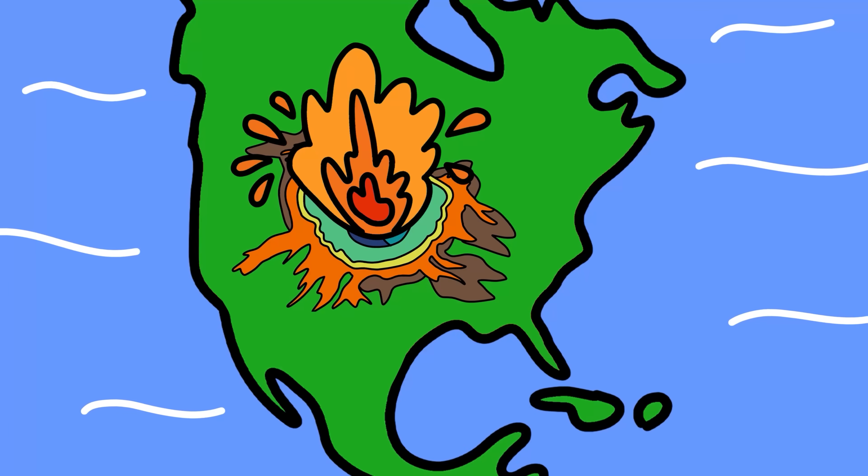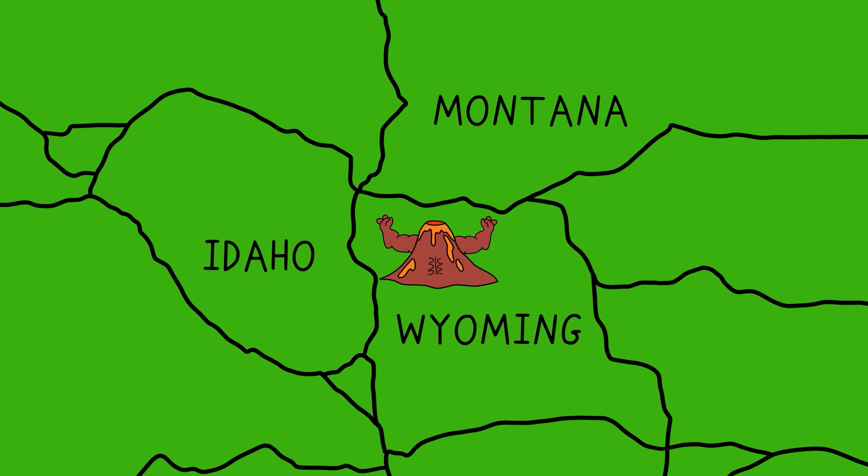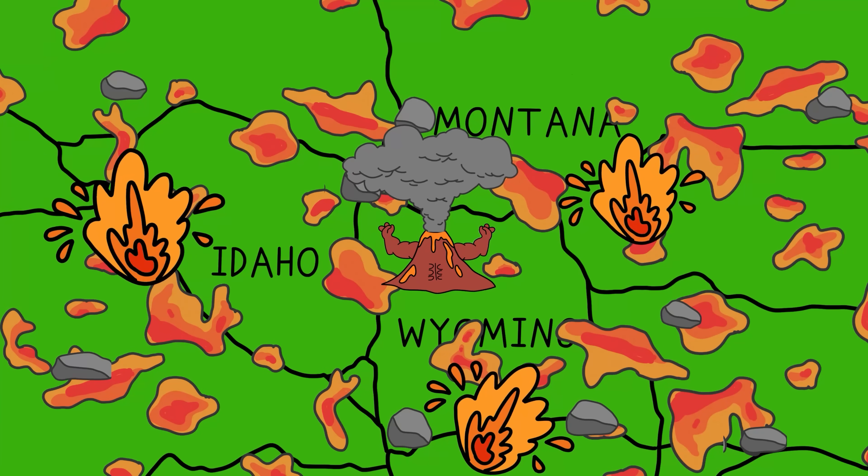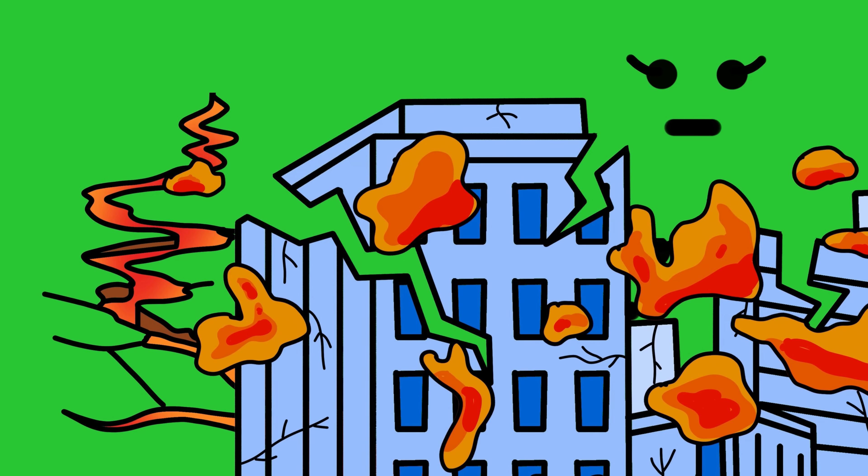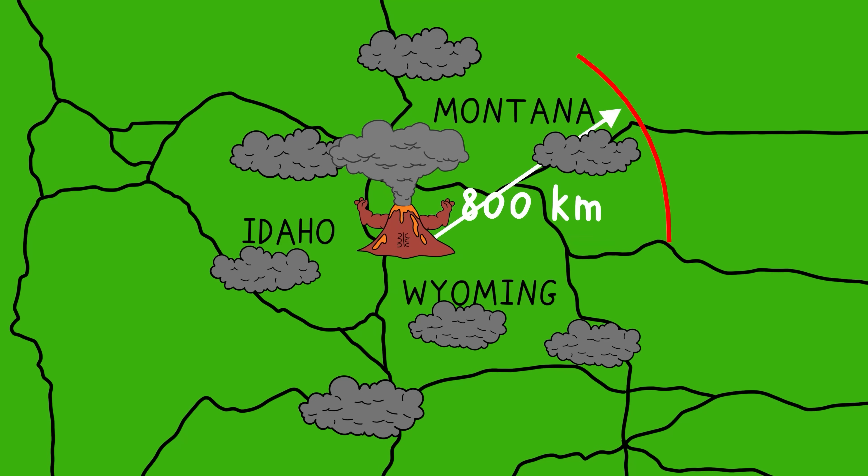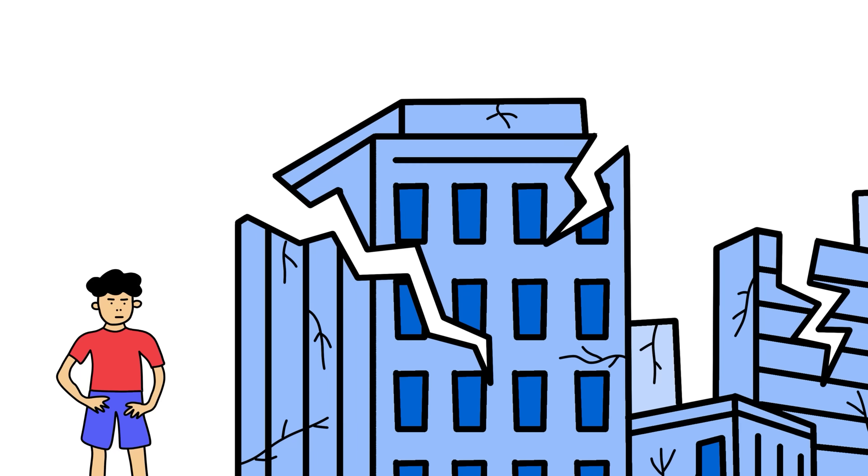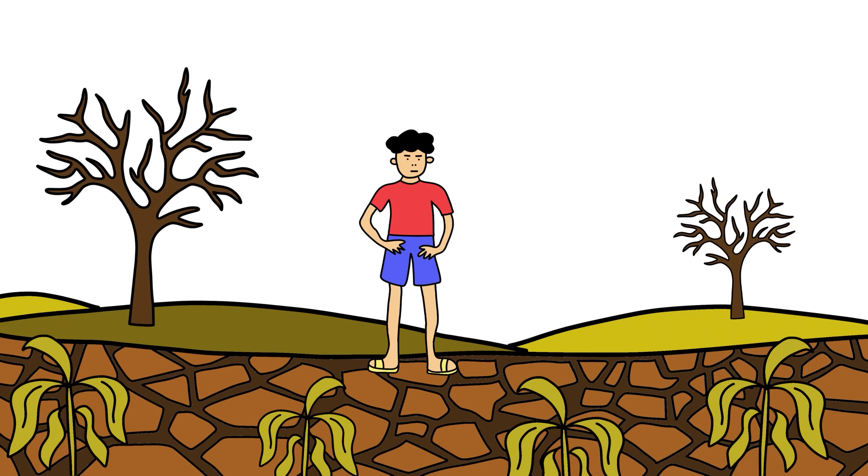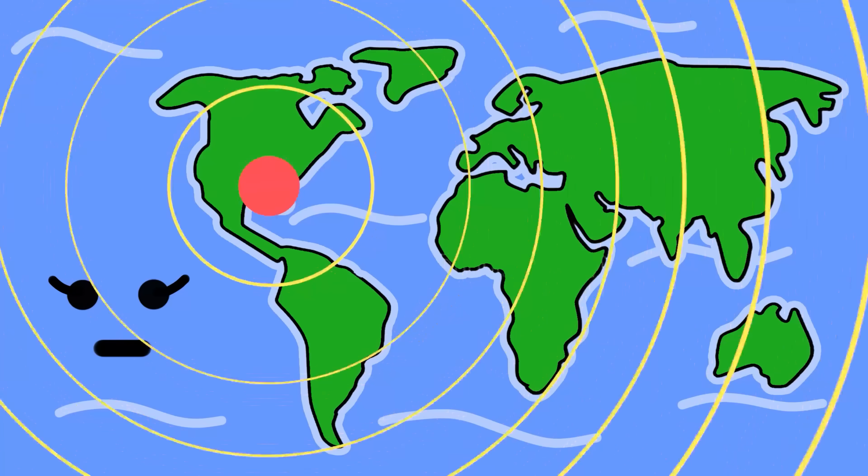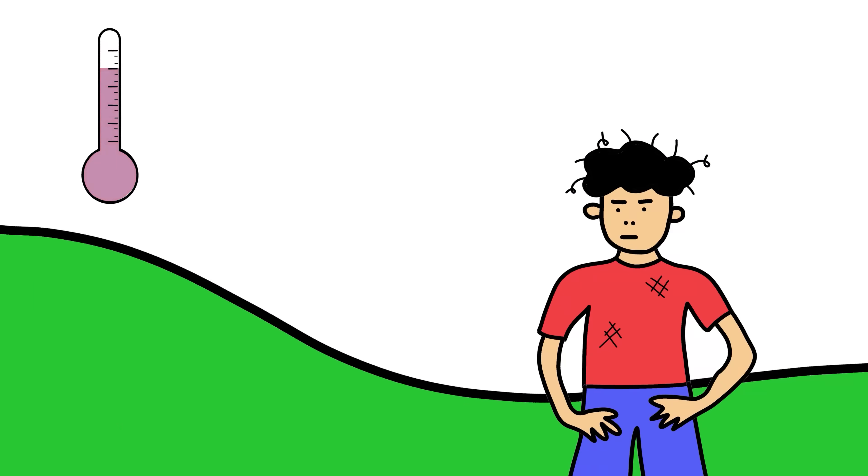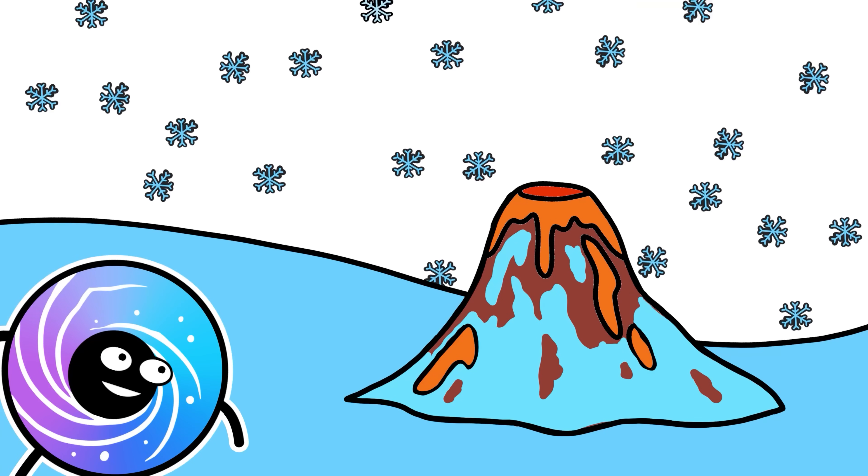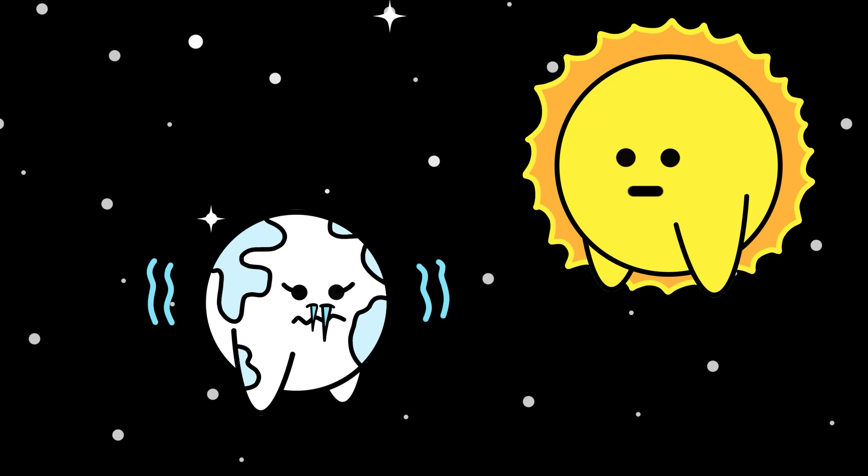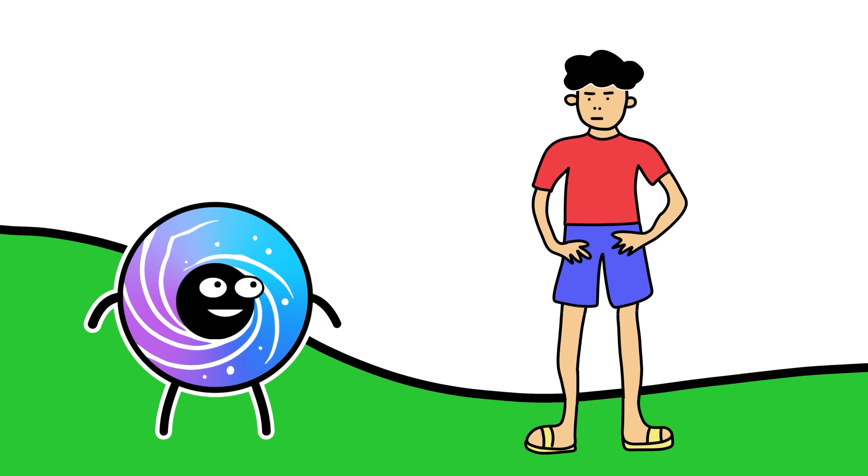If Yellowstone erupts, the surrounding states of Idaho, Montana, and of course Wyoming would be instantly consumed by what's called pyroclastic flows of lava, racing faster than cars on a highway and destroying everything in its path. Ash would blanket over 800 kilometers in every direction, collapsing buildings, poisoning water, and suffocating crops. The shockwave alone would be felt around the world. Globally, temperatures would plunge as the atmosphere fills with ash and sulfur, triggering years of volcanic winter. On average, events like this happen once every 17,000 years. That means we're due.